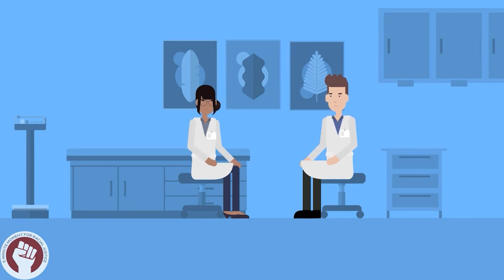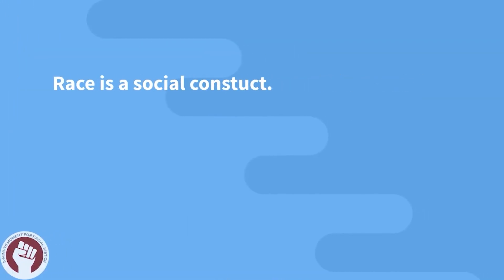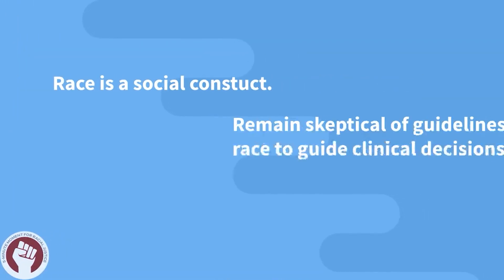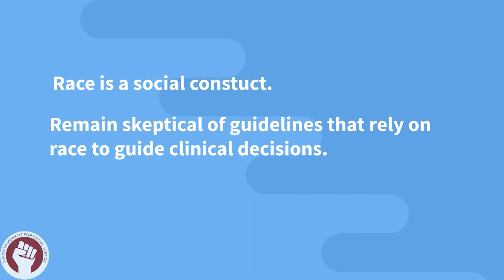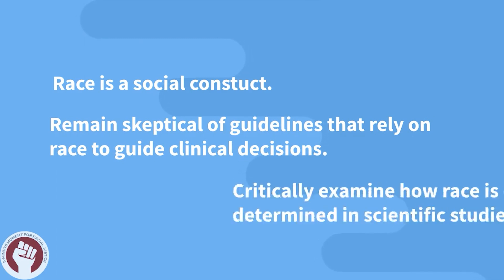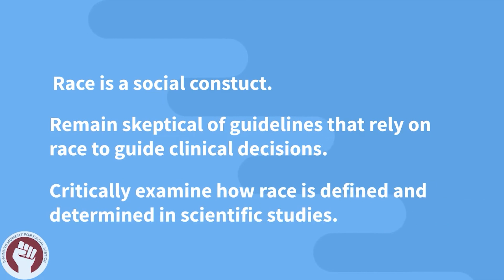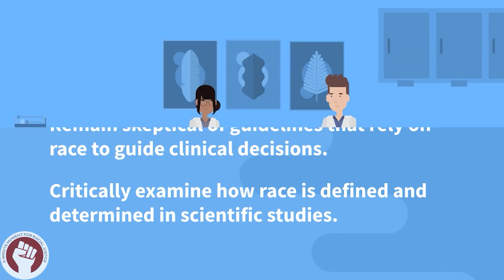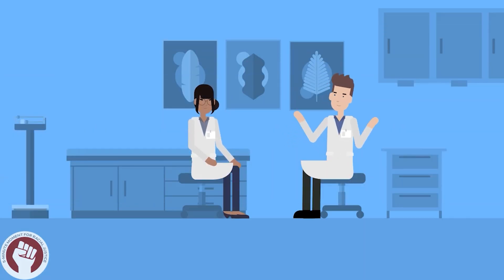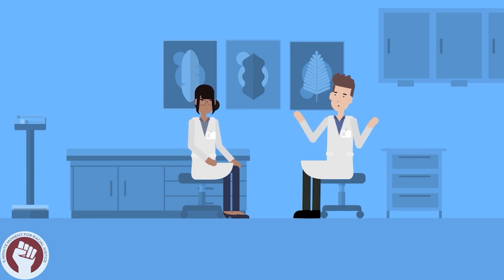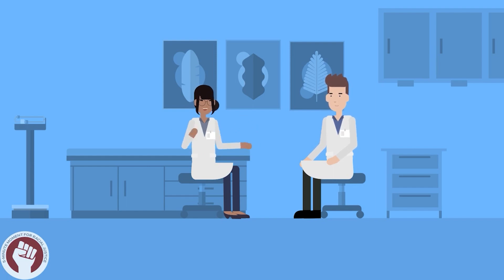So bringing this back to our patient today, what should we do instead? From our discussion, what I learned is that race is a social construct, and we should be skeptical of guidelines that rely on race to determine how we test or treat patients. In the future, I'll make sure to critically examine how race is defined and determined in scientific studies. So for our patient, I would recommend reassessing her risk for a UTI without the inclusion of race as a factor. Fabulous. Let's go see her together.